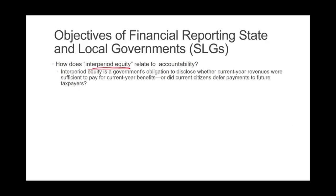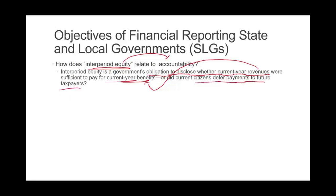Let's talk about inter-period equity, because I mentioned it. Inter-period equity relates to accountability. It is the government's obligation to disclose whether current year revenues were sufficient to pay current year benefits. Did we generate enough revenue to pay for this year's benefits? Or did the citizens defer the payment for future taxpayers? In other words, the government spent the money now but did not have the revenue, and they are going to shift those expenses to future taxpayers in future years. You're not supposed to do this — you're supposed to achieve inter-period equity.